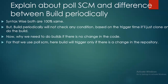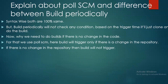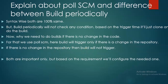If there is no change, then no build. If there is any change, build. All this is automatic — we just schedule it. If there is any change it will trigger; if no change, no trigger. In Poll SCM that's how it works. But Build Periodically will trigger all the time regardless of whether there is a code change or not.